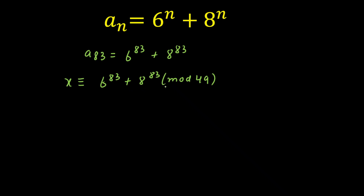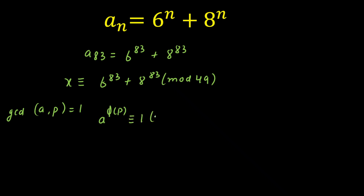If we do it by the regular method, simplifying this would take a lot of time. So in order to save time, I am going to use the Euler-Totient theorem. Let me briefly review it: if A and P are two numbers that are relatively prime — meaning GCD(A, P) = 1 — then A raised to the power φ(P) is congruent to 1 modulo P.